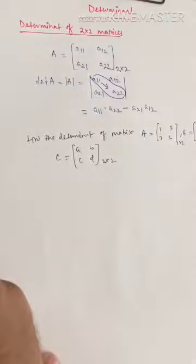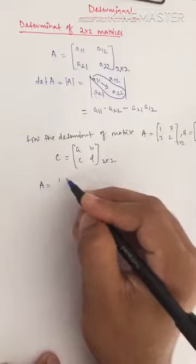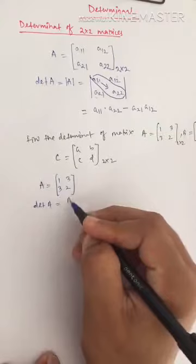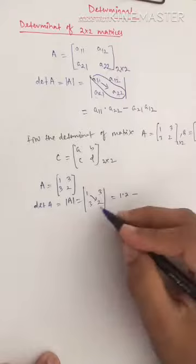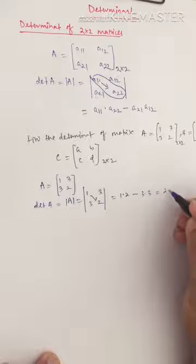For the first matrix A = [1, 3; 3, 2]: the determinant of A equals 1×2 minus 3×3, which gives 2 minus 9, equal to minus 7.